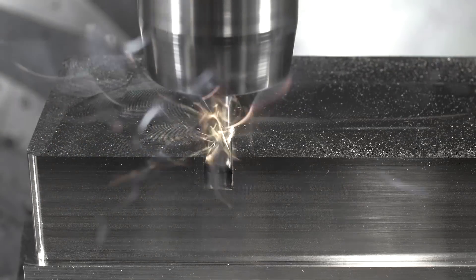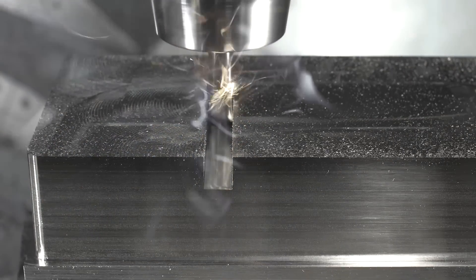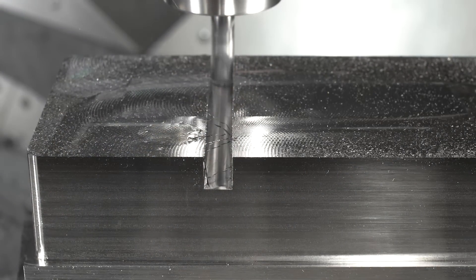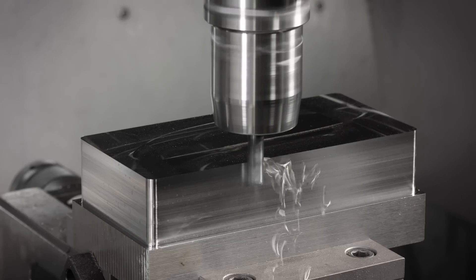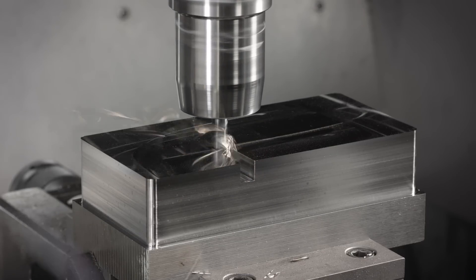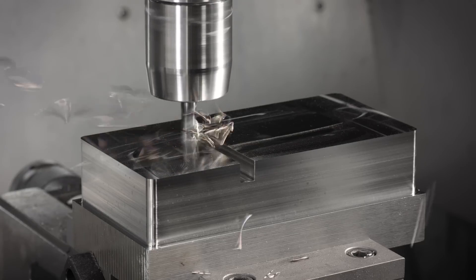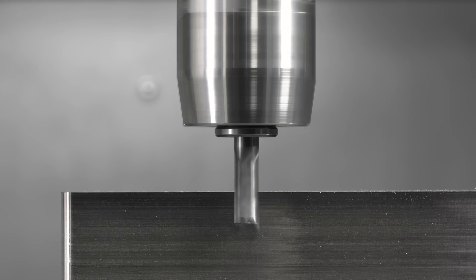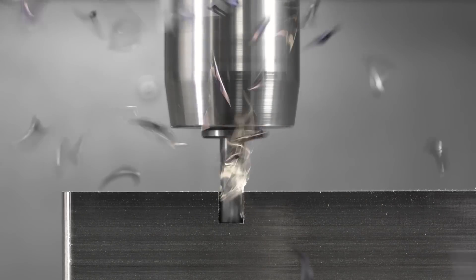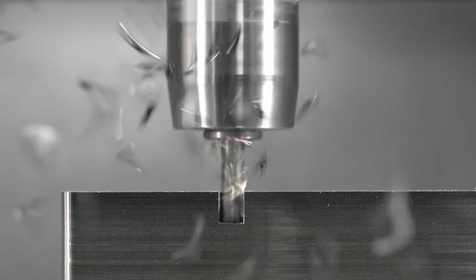The conventional roughing method can be very productive with high material removal rates under stable conditions. It may cause high heat generation on the tool and workpiece which requires lower cutting speeds. Generally the conventional method requires less machining time than the high feed milling method.